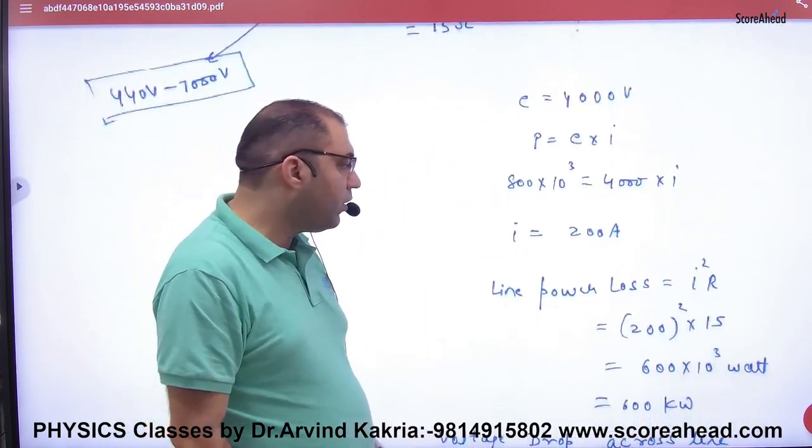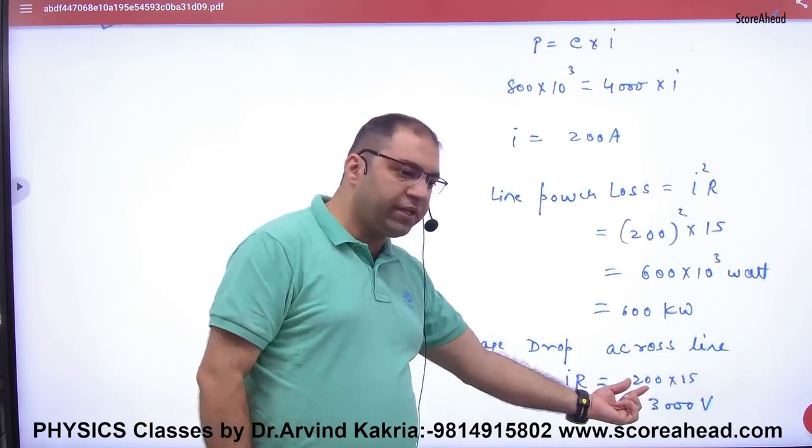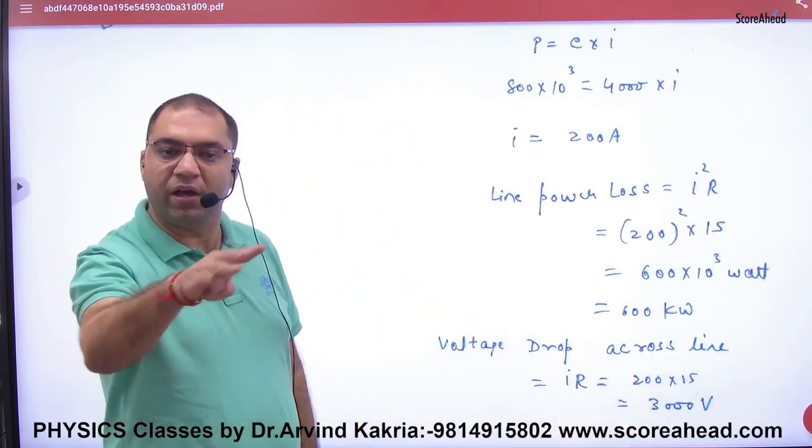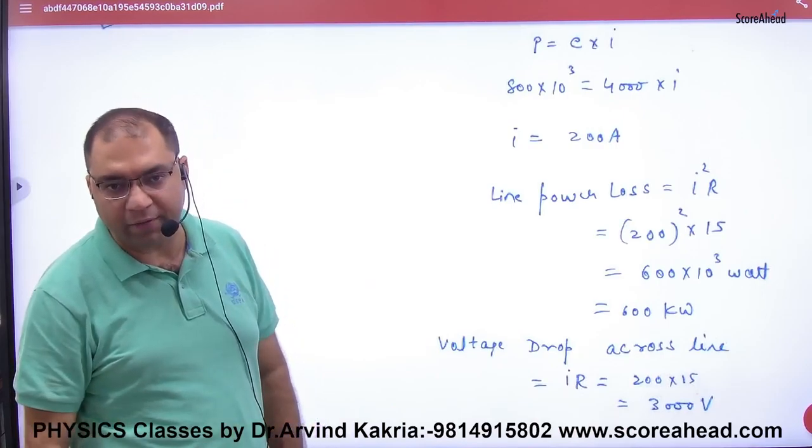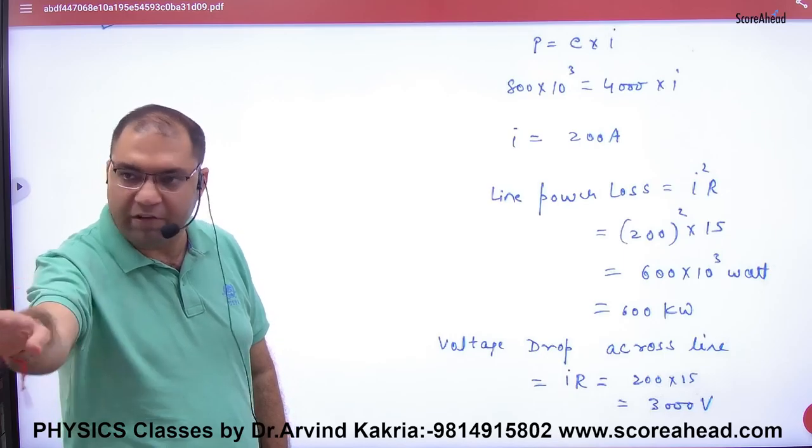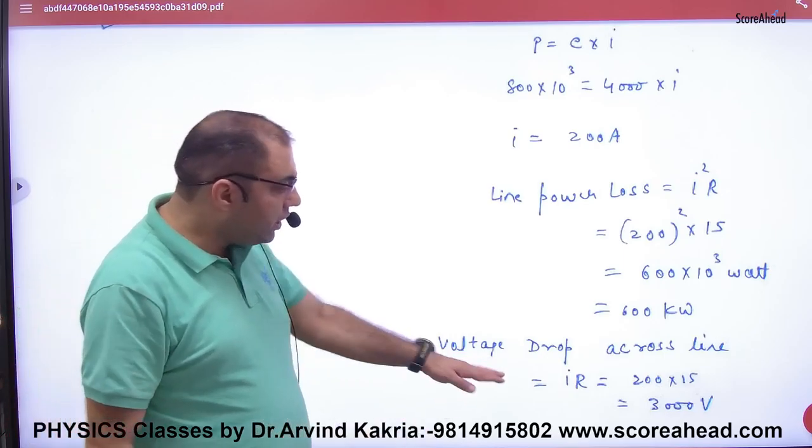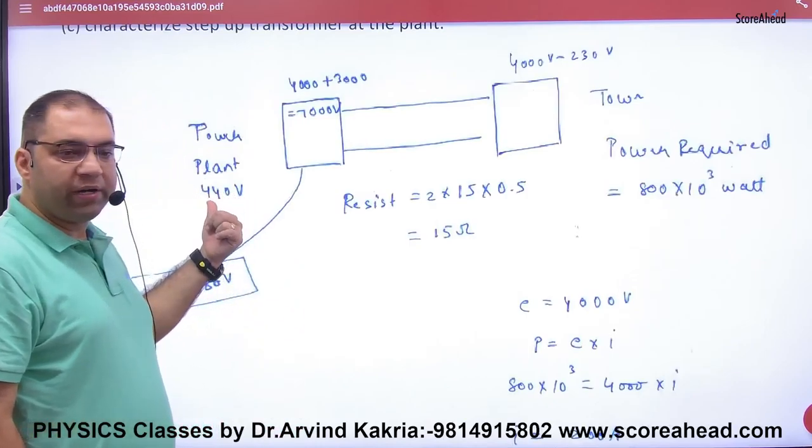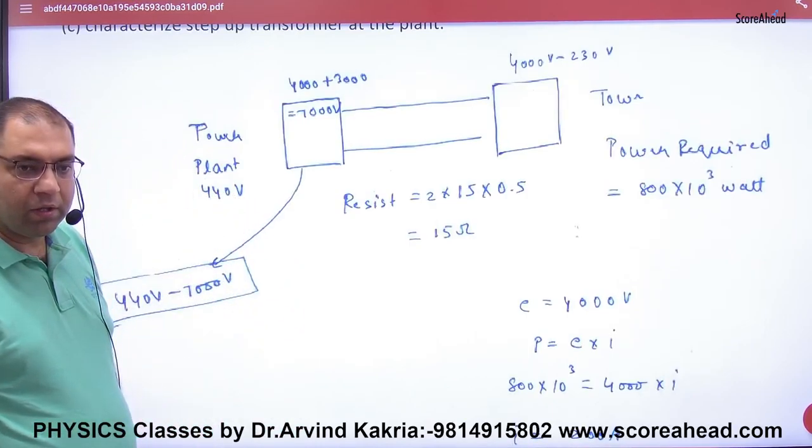Potential drop is 200×15 = 3000 volts. If 3000 volts drop here, and 4000 volts is at the plant, then 3000 volts will develop.